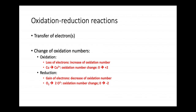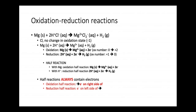Now we're going to talk about oxidation-reduction reactions. In the previous chapter we talked about acid-base as a transfer of protons H+; for oxidation-reduction reactions we're going to transfer electrons. Because electrons are transferred, oxidation numbers will change. Oxidation is a loss of electrons — losing electrons results in an increase in oxidation number. For example, copper goes from 0 to 2+. Gaining electrons for reduction leads to a decrease; O2 goes to O²⁻, from 0 to minus 2.